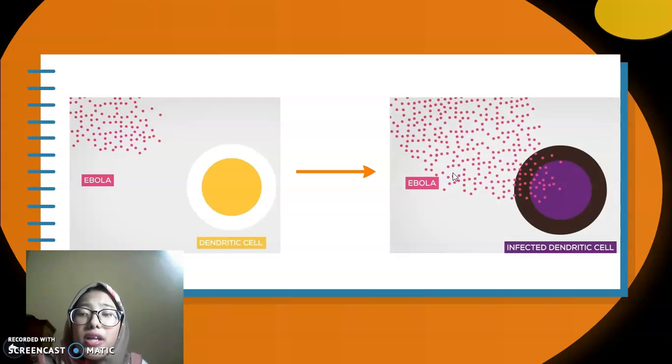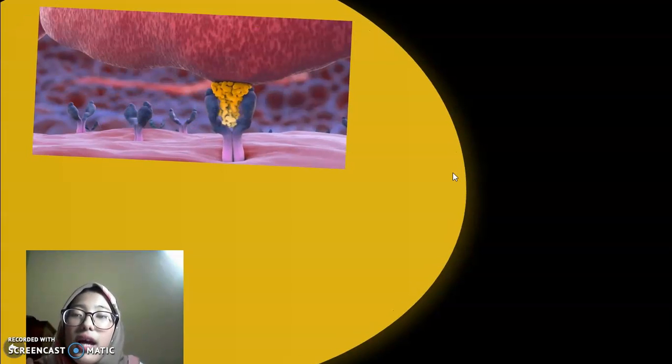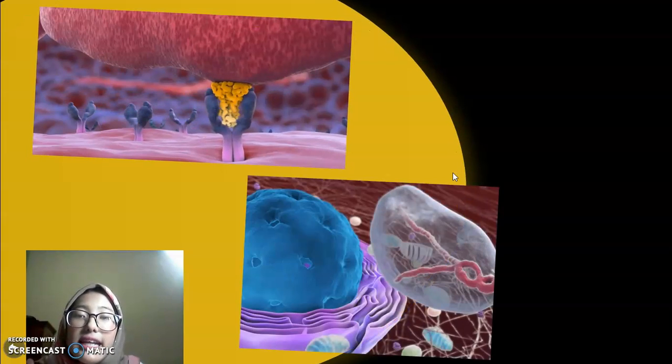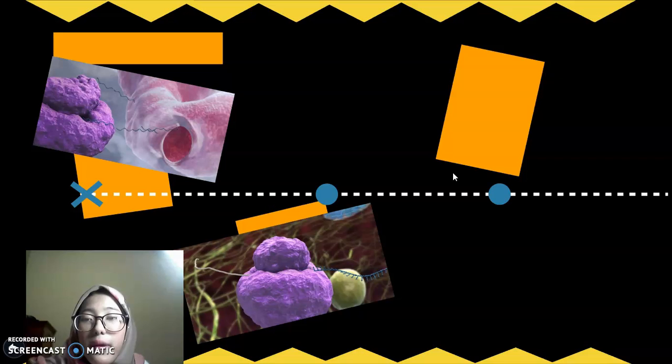But when Ebola strikes, it directly attacks the immune system. Some of the first cells it takes over are the dendritic cells, the brains of the immune system. The virus fuses with tissue cells, infects them, and releases its genetic content into the cells. RNA uses the host cell to generate copies of itself. The genetic material takes over the cell machinery to replicate itself.